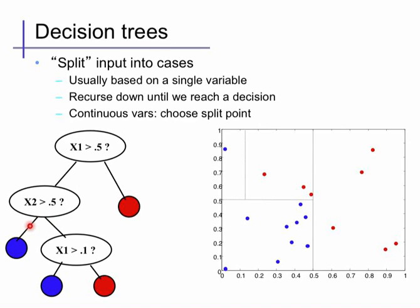If that comparison is false, we output class blue. If it outputs true, we continue to get another branch and comparison, where we look at feature 1 again, compared to a threshold of 0.1. And if that's true, we output red. If it's false, we output blue.